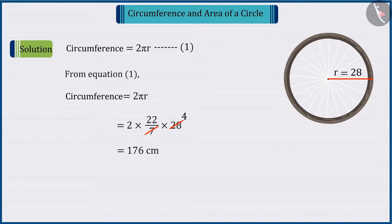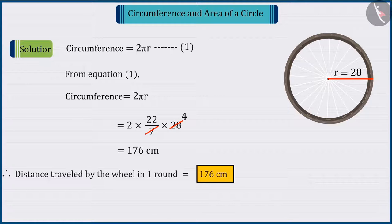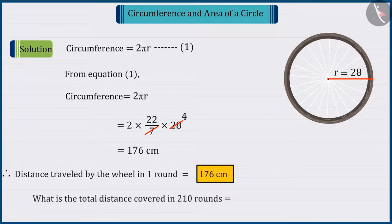So we can say that the wheel covers a distance of 176 cm in one round. Can you tell how far it has covered in 210 rounds?